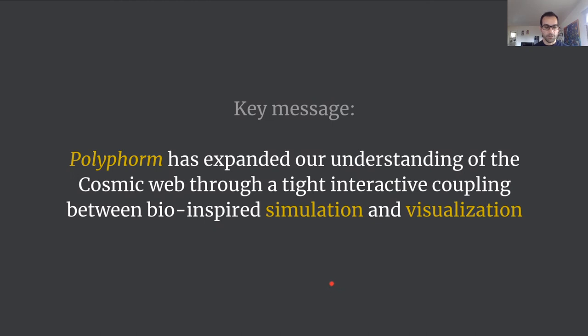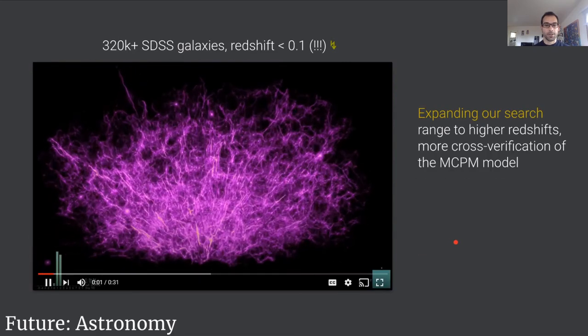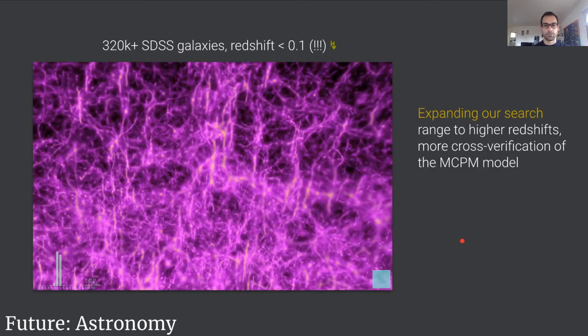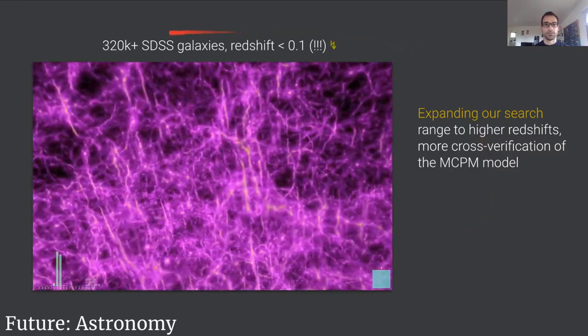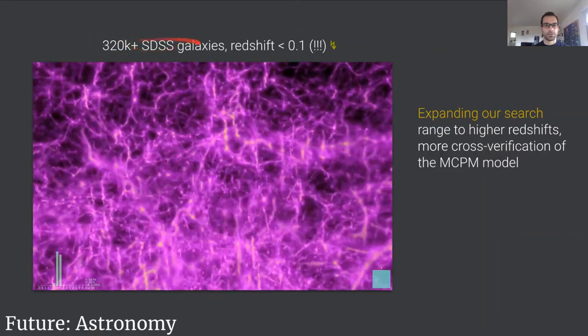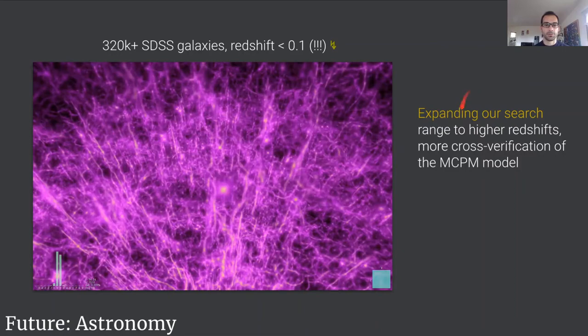The key take-home message is that Polyform has actually expanded our understanding of the cosmic web through a tight interactive coupling between bio-inspired simulation and visualization. In the future we want to expand our search to fit to more galaxies and more complex data sets. Here is an early prototype fitting to 300,000 galaxies obtained from the Sloan Digital Sky Survey data set.